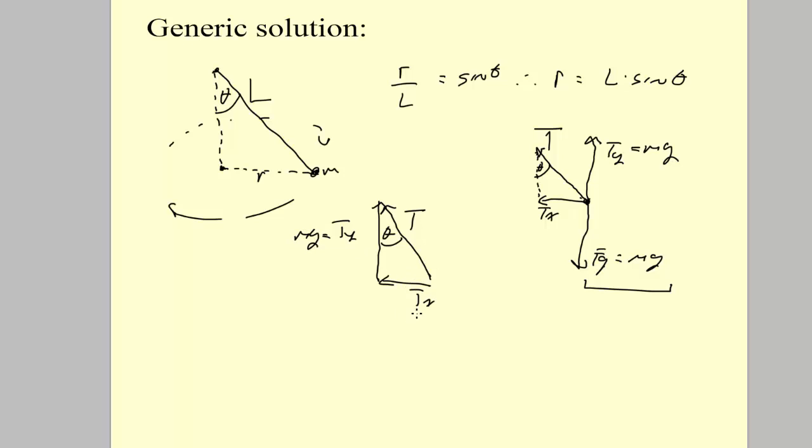And we want the X component because the X component is the centripetal force. So in order to do that, we'll know what theta is and we'll know what mg is, so we just use tangent. Tx over ty, which is mg, is equal to the tangent of theta. So Tx is mg times the tangent of theta.